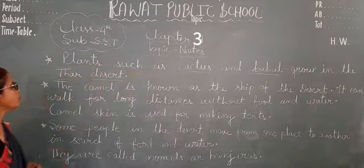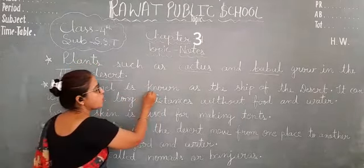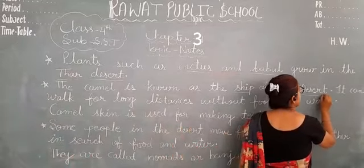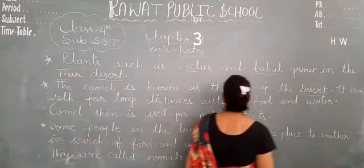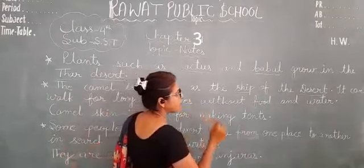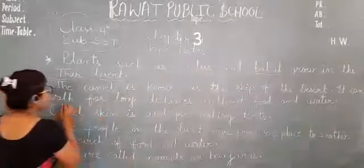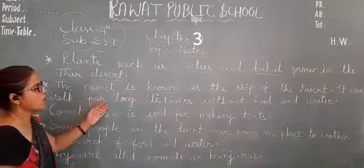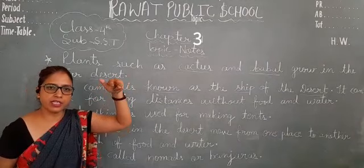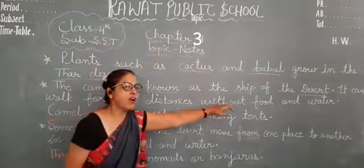Next point: camel is known as the ship of the desert. Camel is known as the ship of the desert. It can walk for long distances without food and water.